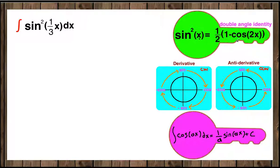Whatever the angle is here, we are doubling it by multiplying by 2. So we're going to rewrite sin²(1/3 x) in terms of the double angle identity.